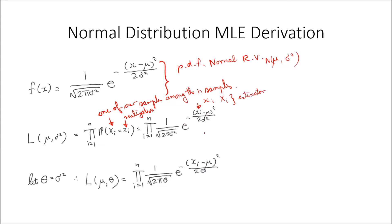We notice in the likelihood function that we have sigma squared appearing twice. To make our lives easier — and we'll see why — we substitute theta equal to sigma squared. That will make taking the partial derivative of the log-likelihood function with respect to the parameter representing the population variance much easier. So the likelihood function is now specified in terms of mu and theta.